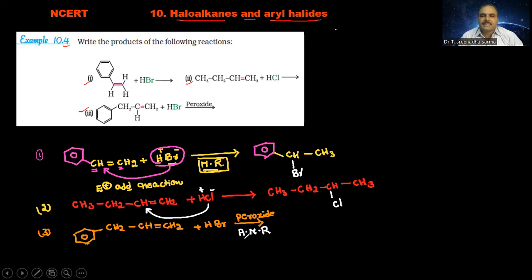So based on this rule, whatever the nucleophile is there in the reagent, that can be attached at more number of hydrogen atoms of carbon in the double bond position. This is the free radical addition reaction. The formation of the product: C6H5-CH2-CH2-CH2-Br. So this is the product.